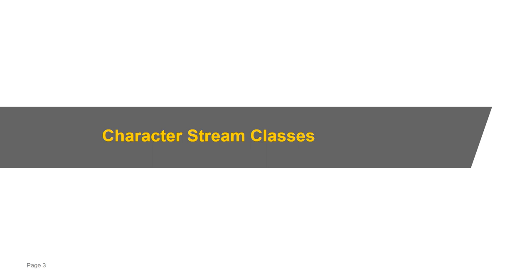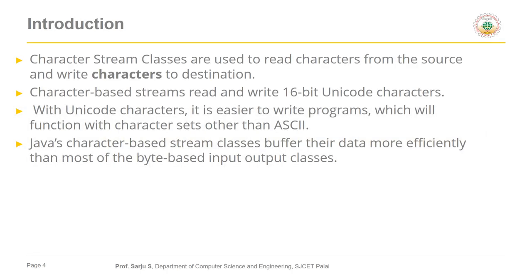If you are using a Unicode-16 format it uses two bytes to represent a character. Input and output streams only support reading and writing one byte at a time, which is not sufficient to manipulate character stream data. To solve this problem we use character stream classes, which are mainly used to read data in the form of characters from a source and write characters to a destination.